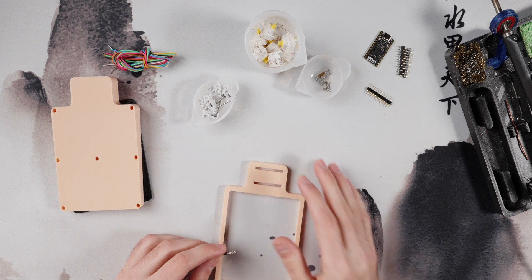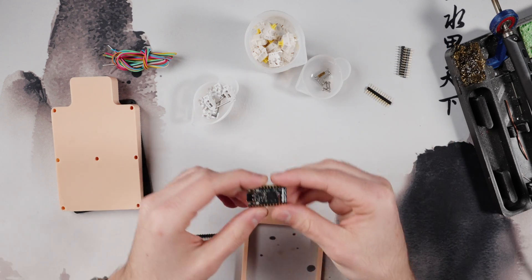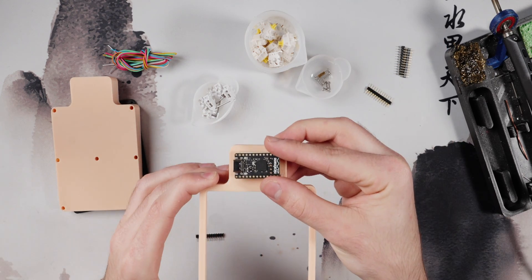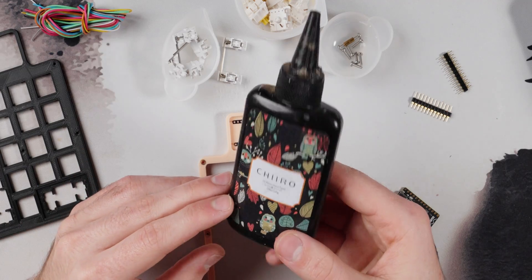One other thing with these cutouts I didn't mention is they're offset, and that's because when you mount the Nice Nano it wouldn't be centered if they were exactly in the middle, so I just offset them so it looks centered - little design choice there I made. What I'm going to do is I'm going to glue these in now with some UV resin.